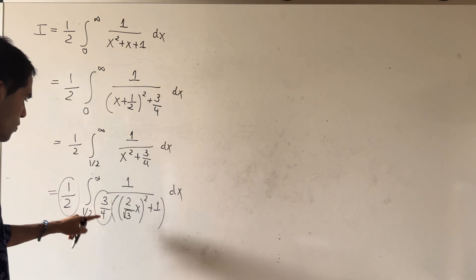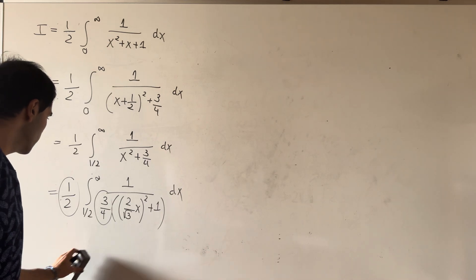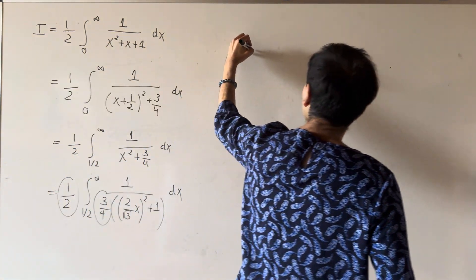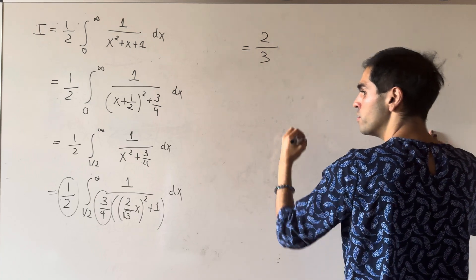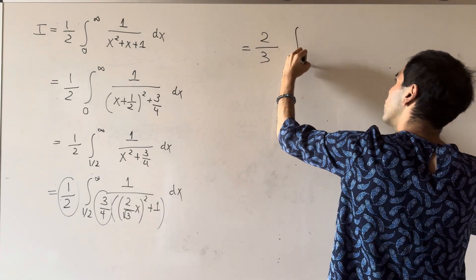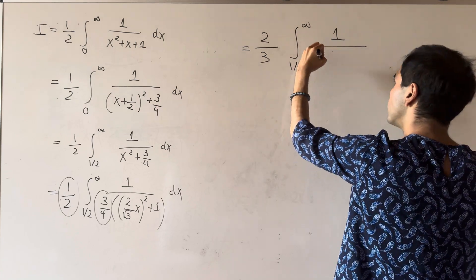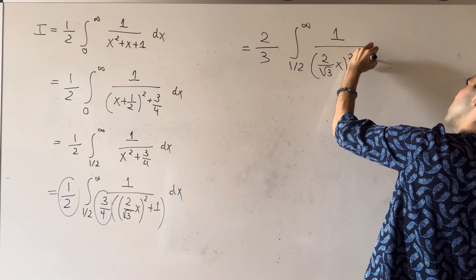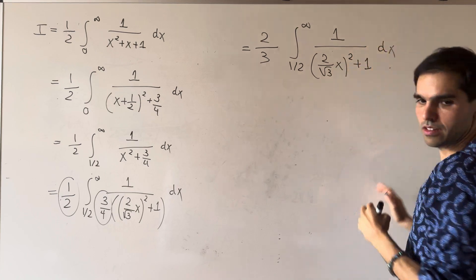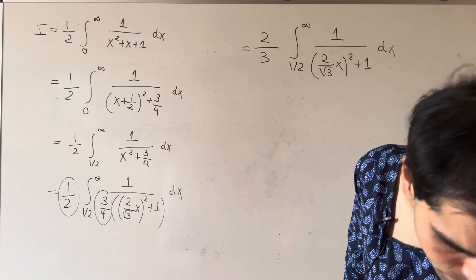Which here becomes, so in the end we have 2 thirds. Maybe let me write it here. 2 thirds integral from 1 half to infinity of 1 over 2 over square root of 3 x squared plus 1 dx. Let me just double check. Yes?